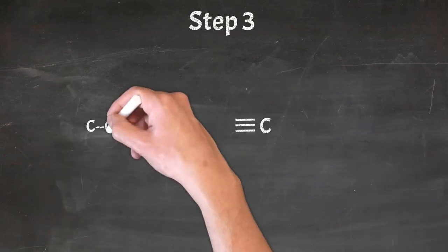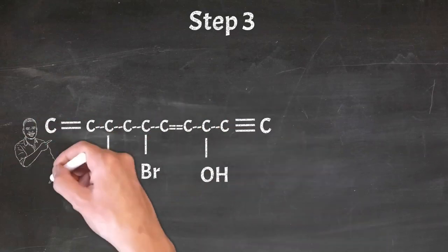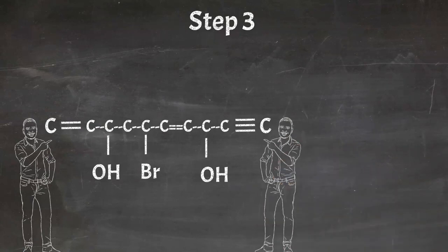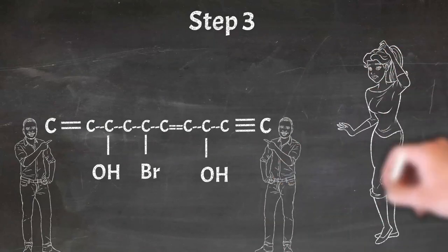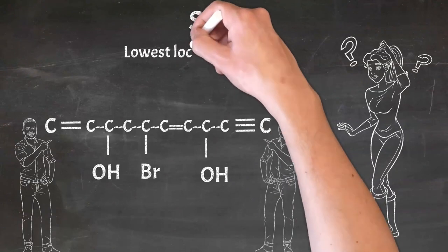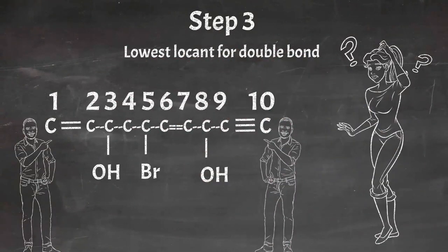What if you have a structure where both functional groups and multiple bonds fall at the same positions from both ends? Rule number 3: we will number the chain from the end closest to the double bond. The carbon at the left end is closest to the double bond, therefore we will number the chain from the double bond side.